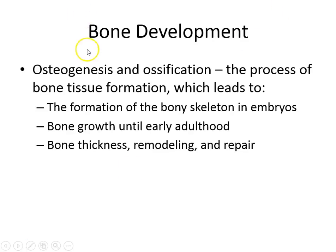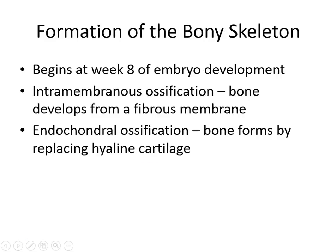Now we're going to look at the different ways we make bone through osteogenesis or ossification — the making of bone tissue. We'll look at how it's made as embryos, how it grows into adulthood, and then how we constantly remodel, build up, break down, and repair bone. Formation in the embryo begins about two months in, and bones form in one of two ways: intramembranous ossification or endochondral ossification.